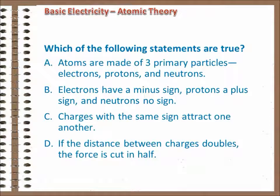Okay, let's review. Pick all of the true statements. Let's see how you did. Atoms are made of three primary particles, electrons, protons, and neutrons. That's true. Electrons have a minus sign, protons a plus sign, neutrons no sign. That's true too.